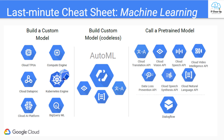Here is a summary of the options for ML models on GCP for your reference. You should pick the option based on this order. First, try to leverage a pre-trained model in Cloud ML APIs such as Translation API, Vision API, Speech API, Natural Language API, Video Intelligence API, Data Loss Prevention API, and Dialogflow. The pre-trained model uses Google's model and Google's data.